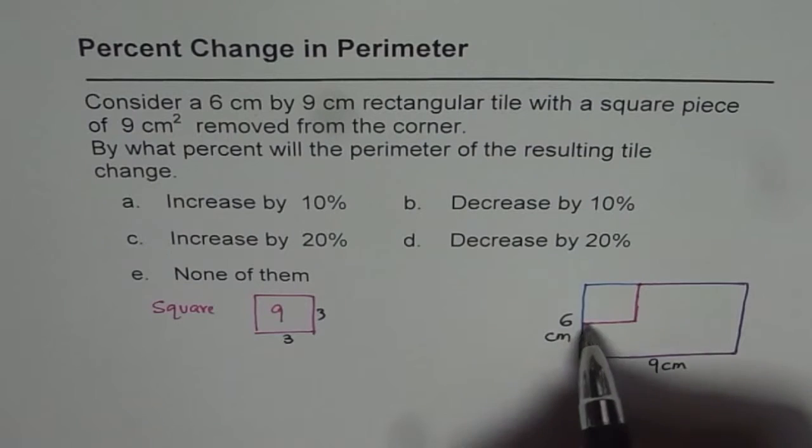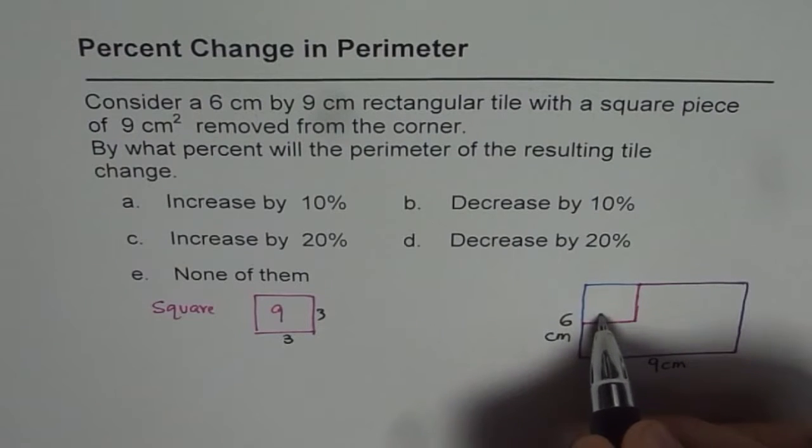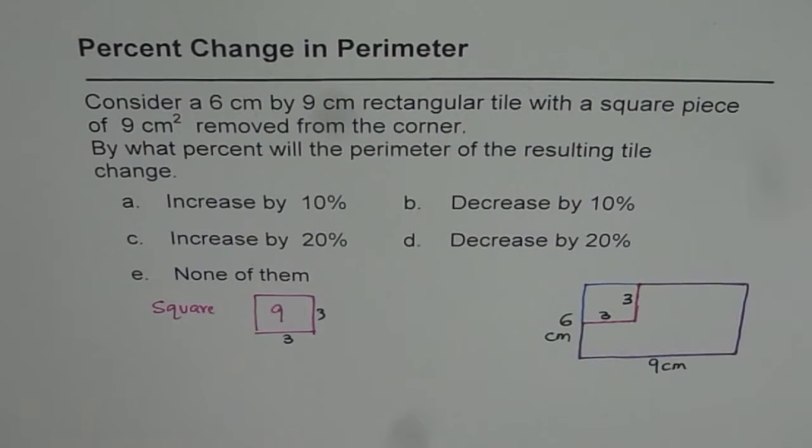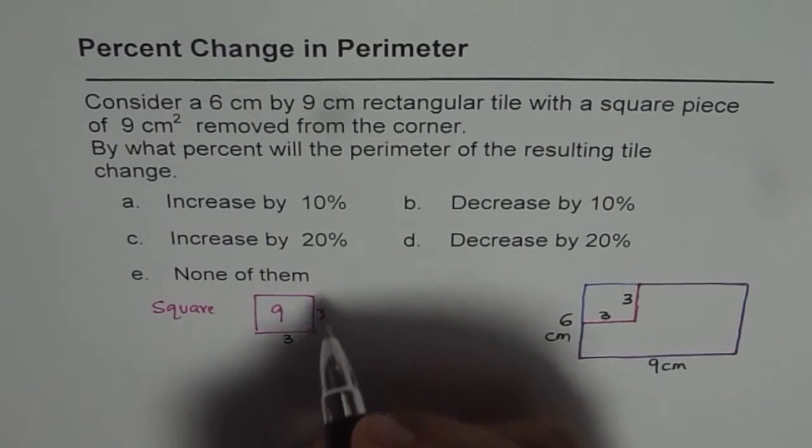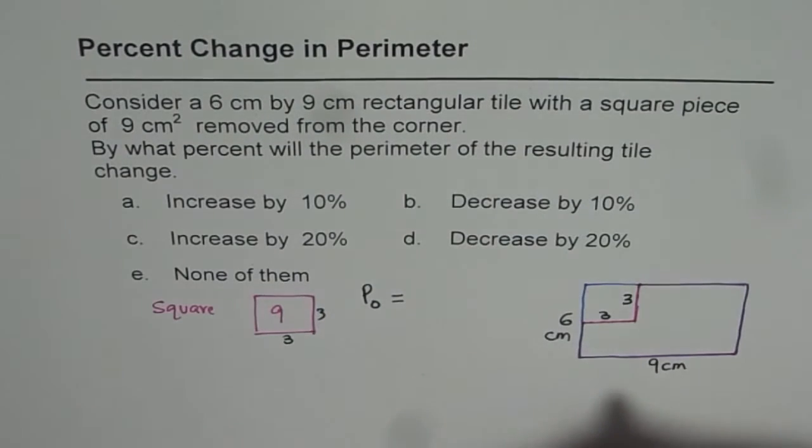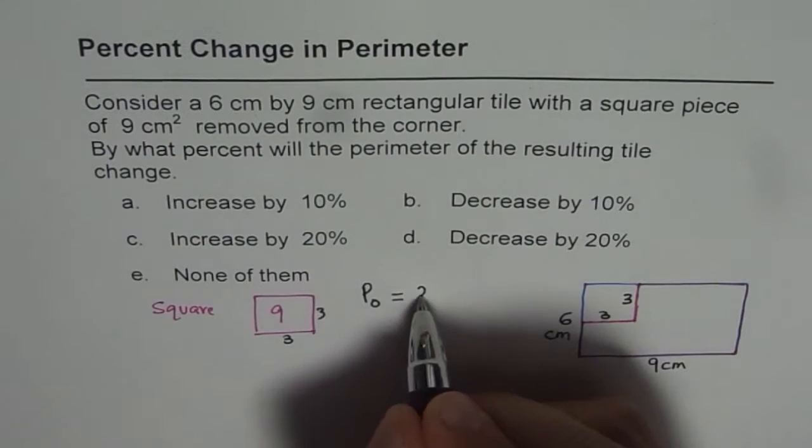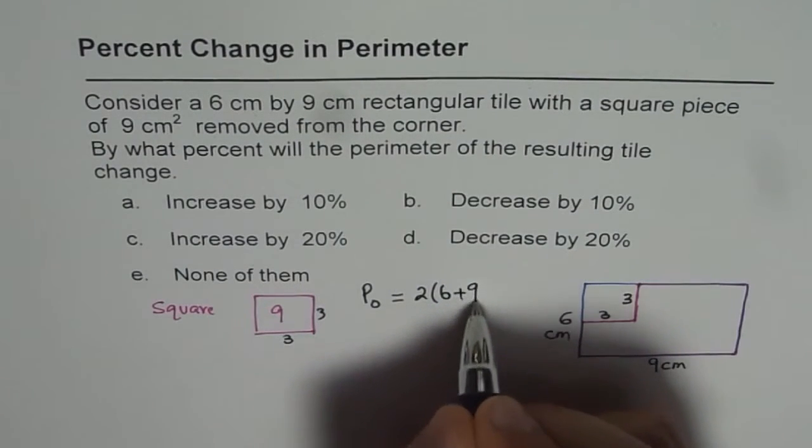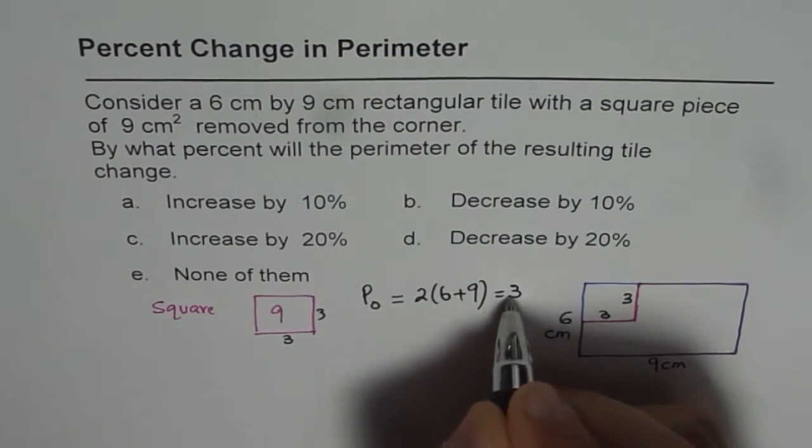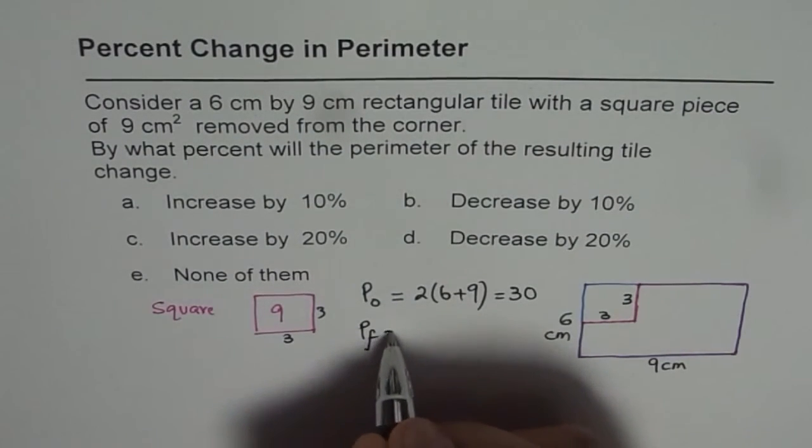Now the perimeter after cutting will be how much? 9, right? So we removed 3. So this is 3 by 3, correct? Now let us see what is the original perimeter. So we can write perimeter originally is 6 plus 9 times 2, right? So we can write 2 times 6 plus 9 which is equal to 30 cm, correct? Now what is the final perimeter?